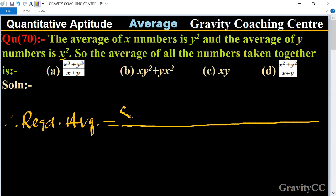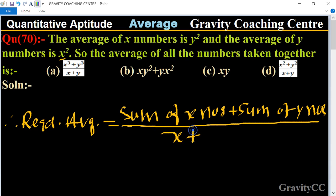Sum of x numbers plus sum of y numbers upon x plus y. So here, sum of x numbers - the average of x numbers is given as y², so the sum of x numbers equals y² into x.